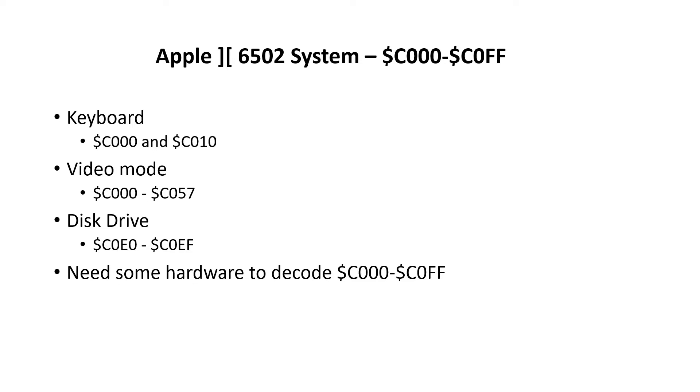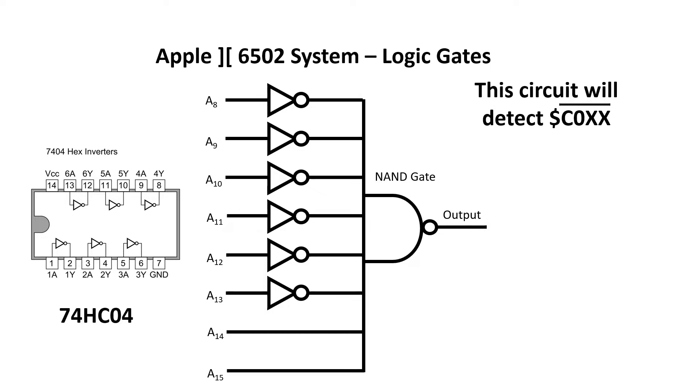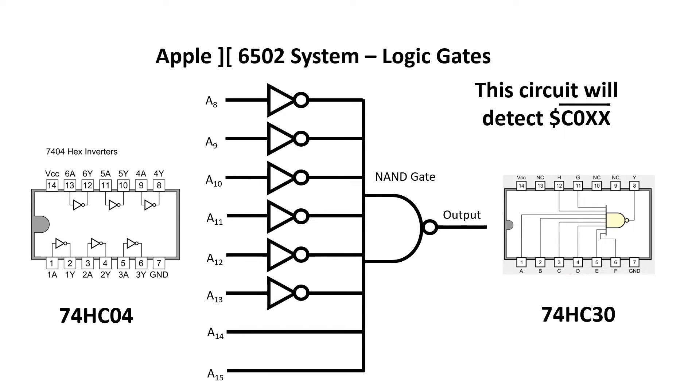If you cast your mind back to some of the early videos I made in the series, you'll remember that I made some special hardware for detecting the C1000 page. This consisted of six inverters and an eight-input NAND gate. Now, the way it's wired, the output will go low when the upper byte of the address bus contains the value C0. Otherwise, it'll be high.